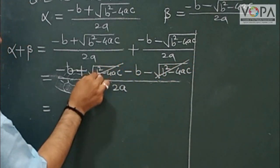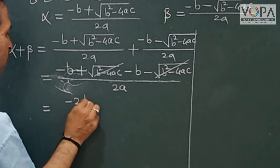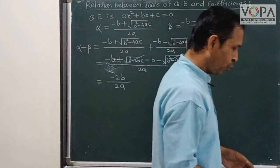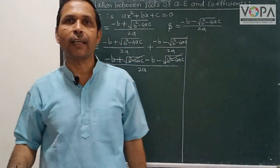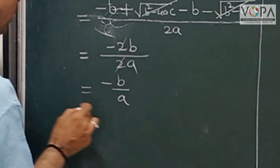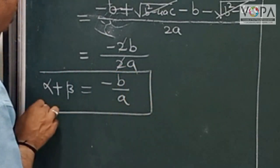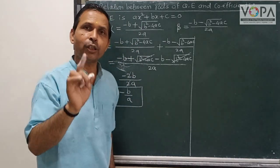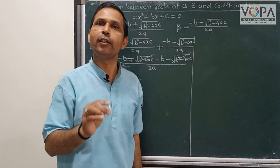Look, this term cancels out: +√(b²-4ac) and -√(b²-4ac) cancel. We have -b and -b, which means -2b divided by 2a. The 2s cancel, giving us the value -b/a. And this is the value of α + β.